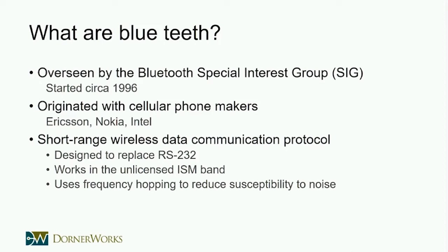Bluetooth in general started in 1996 when the first companies got together to bridge the gap between replacing the RS-232 physical standard with a short-range wireless communication protocol. The Bluetooth Special Interest Group was formed in 1996 and their first revision of the spec was in 1999. It uses the unlicensed ISM band at 2.4 gigahertz and uses frequency hopping to reduce susceptibility to noise.